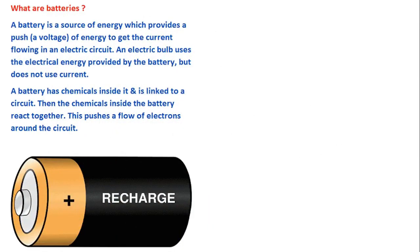Today I am going to tell you about what batteries are. Can you see the picture of this battery? A battery is a source of energy which provides a push — a voltage of energy — to get the current flowing in an electric circuit. An electric bulb uses the electrical energy provided by the battery but doesn't use up the current. A battery has chemicals inside it and is linked to a circuit.